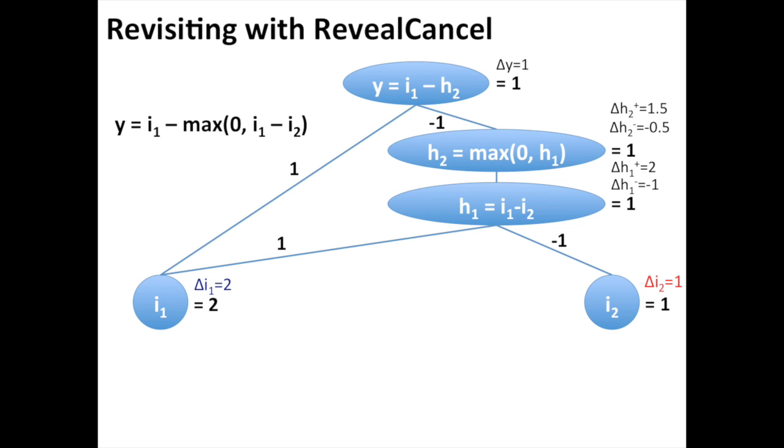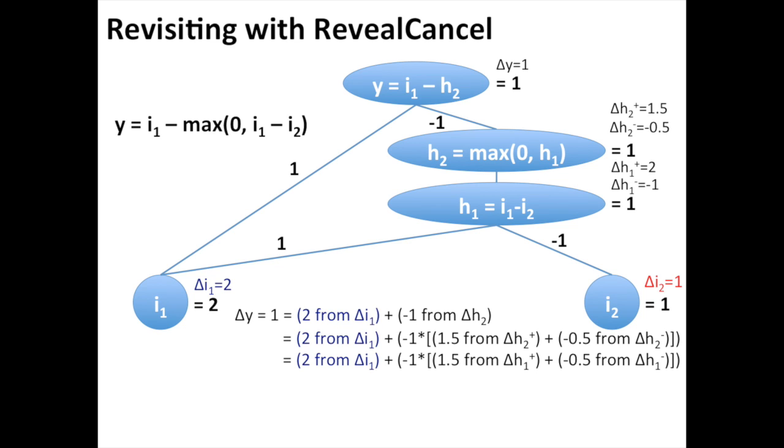Positive 1.5 is the average impact of plus 2 both before and after the plus 2 has been added. How does this change our backpropagation? Well, we again start with delta y equals 1 consisting of a positive 2 coming directly from delta i1 and a negative 1 coming from delta h2. Now here's where it gets interesting. This negative 1 from delta h2 gets divided into a positive 1.5 contribution from delta h2 plus and a negative 0.5 contribution from delta h2 minus. These contributions are inherited by delta h1 plus and delta h1 minus and are then passed on to their inputs via the linear rule. So ultimately, the total contributions are positive 0.5 from i1 and positive 0.5 from i2.